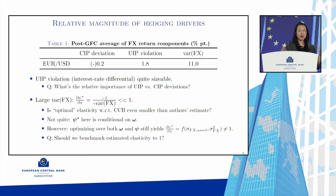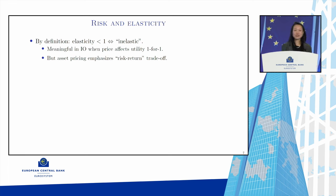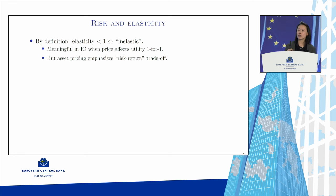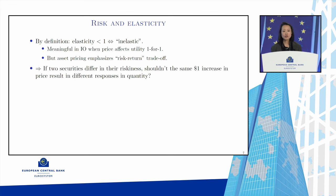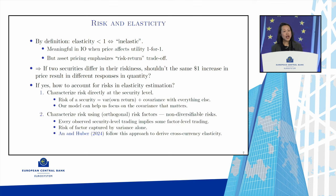We are told in traditional textbooks that an elasticity less than one is inelastic, a cutoff that makes sense in industrial organization where price affects utility one to one. However, in asset pricing we emphasize risk-return trade-off — if two securities differ in their riskiness, the same $1 increase in price should result in different quantity responses. How can we account for risk in our elasticity estimation?